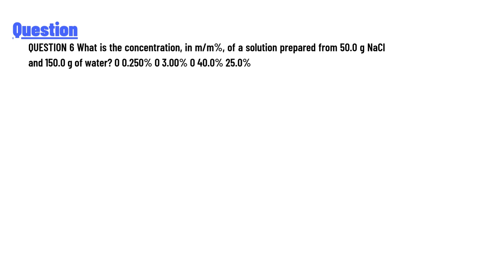What is the concentration in m/m% of a solution prepared from 50.0 g NaCl and 150.0 g of water? A) 0.250% B) 3.00% C) 40.0% D) 25.0%. The answer to this question is: